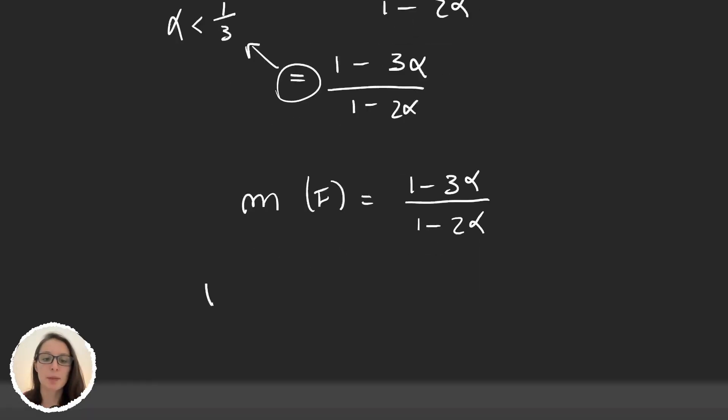So now what if I'm given some β greater than 0 and I want the measure of F to be exactly β? Well then β has to be (1 - 3α)/(1 - 2α).